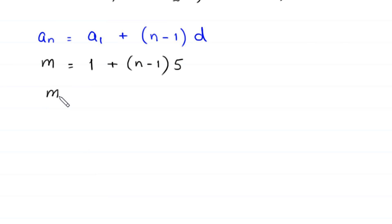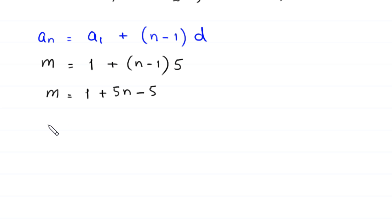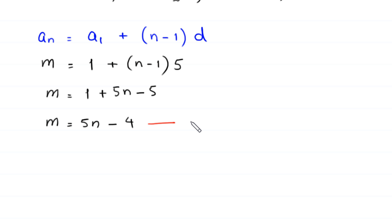Expanding: m equals 1 plus 5n minus 5, which simplifies to m equals 5n minus 4. We will call this Equation 1.